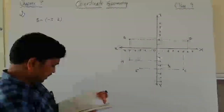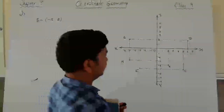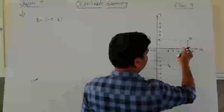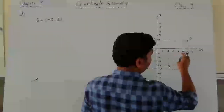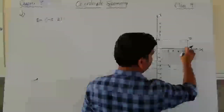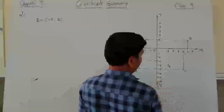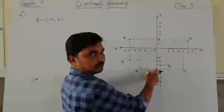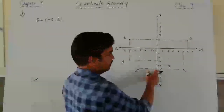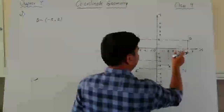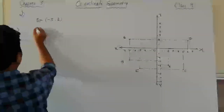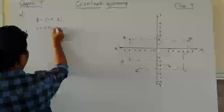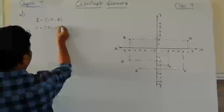The second part asks for the coordinates of C. Look at point C — the dotted lines intersect the x-axis at 5 and the y-axis at minus 5. Remember the sign — minus 5. So the coordinates of C are 5 comma minus 5.